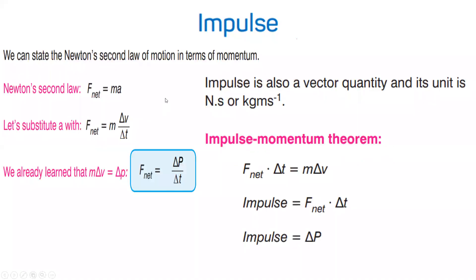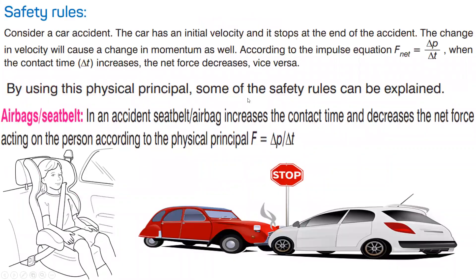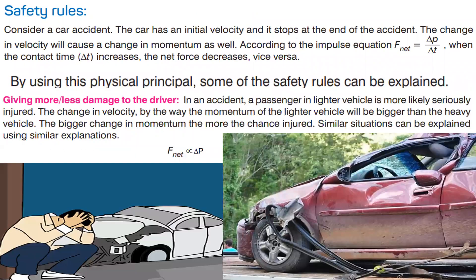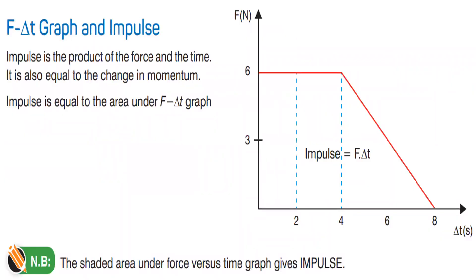Impulse — all definitions, what we explained. From Newton's second law we can write the impulse formula. The unit of impulse is the same. Please read all the safety rules and details. And for graph questions — force and time graphs: in a force-time graph, the area gives you impulse, f times delta t, so you write delta p1, delta p2, delta p3.